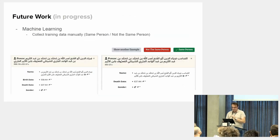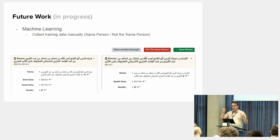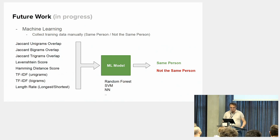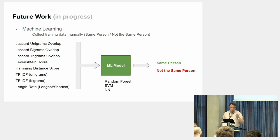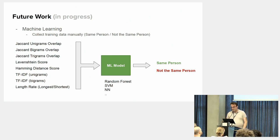For future work, we are working to include machine learning in our pipeline by collecting training data manually. We have two pieces of information about the same person, and manual annotators will assign whether it is the same person or not. At the end, we will collect features like Jaccard unigram overlap, bigram overlap, Levenshtein, TF-IDF, and link-based features, and feed all this information to a machine learning model — a random forest, support vector machine, or maybe a neural network — to classify whether two names refer to the same person or not. This method has been very effective in our experiments, achieving 96% accuracy so far. We hope that with more training data, we will get even better results.